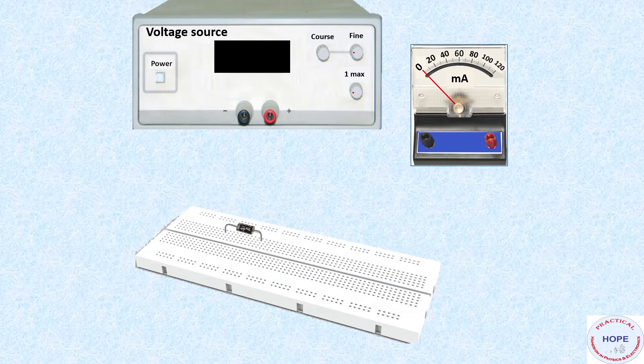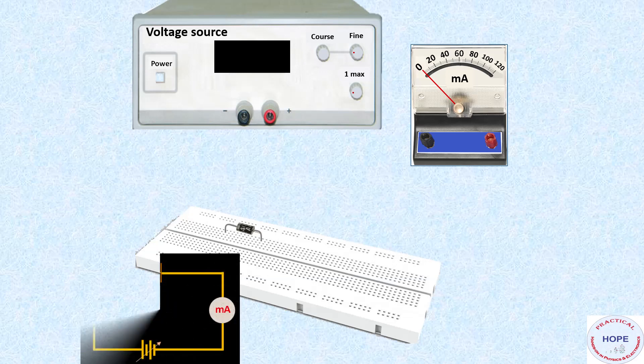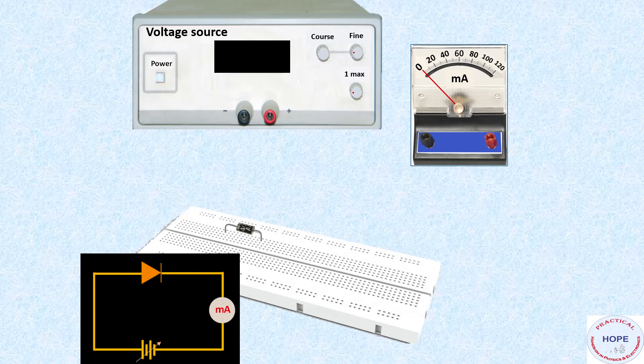So now let's move towards our main circuit. This is the main circuit basically, we have a diode, millimeter and power supply in series with each other. So let's join the circuit. The positive of the battery is connected to p of the diode, n of the diode is connected to positive of the millimeter. The negative terminal of the millimeter is connected to negative terminal of the power source.